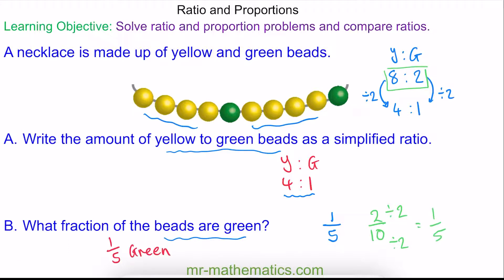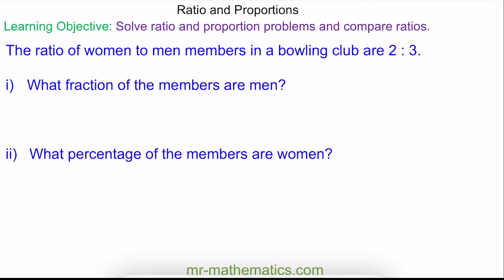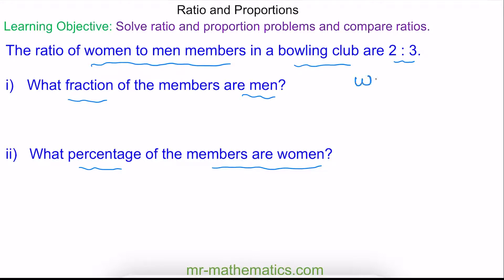Let's try one more question. Here we have a ratio of men to women members in a bowling club, and this is 2 to 3. Try to work out what fraction of the members are men, and then what percentage of the members are women. You can pause the video and resume it when you're ready. So we have our ratio of men to women, which is 2 to 3.